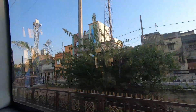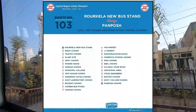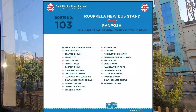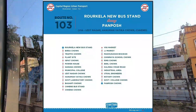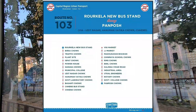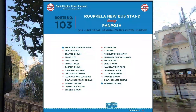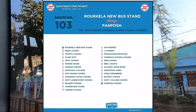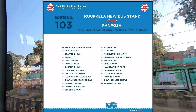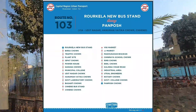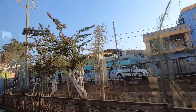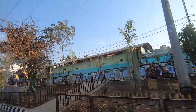Route number 103: Raurkela new bus stand to the airport and back. Via Udit Nagar, Hanuman Vatika Chowk, Chhend, Kalinga Vihar Road, and Rotary Chowk to Panposh.